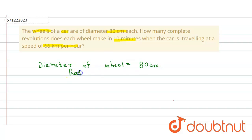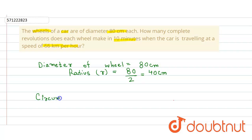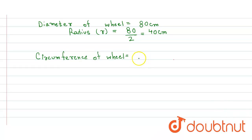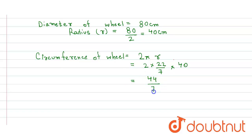So the radius, let it be r, is equal to half of diameter, that will be equal to 80 divided by 2, which is equal to 40 centimeter. Now we first calculate the circumference of the wheel. The circumference of the wheel, which is in the shape of a circle, is equal to 2πr. That will be equal to 2 into 22/7 into r, where radius equals 40. So that will be 44/7 into 40, which gives us 1760/7 centimeter.